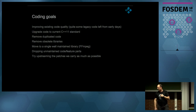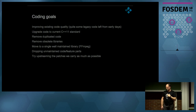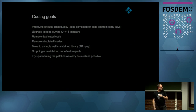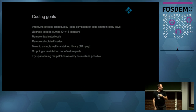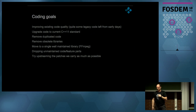The coding goals: improve existing code quality, upgrade the current code to C++11 which we now have as default, remove duplicate code, remove all obsolete libraries. We use FFmpeg as much as we can, because why maintain something when there's something better? We're dropping unmaintained code and upstreaming patches we had, because when you upgrade a library and you have a large number of patches, you still need to fix all that again.